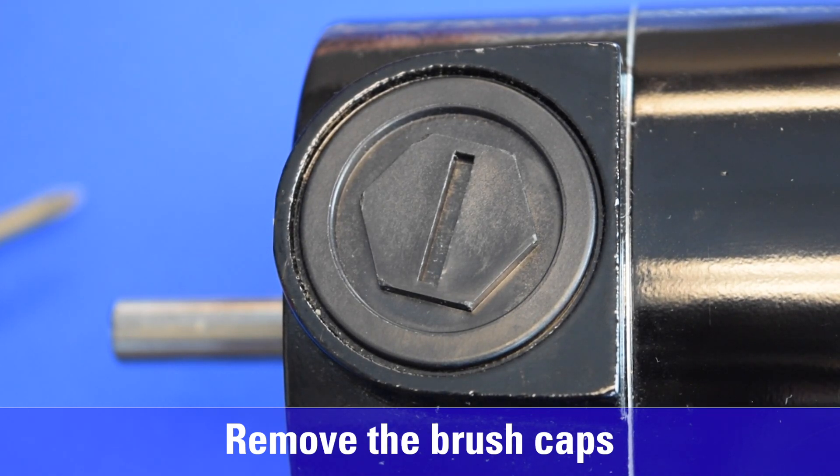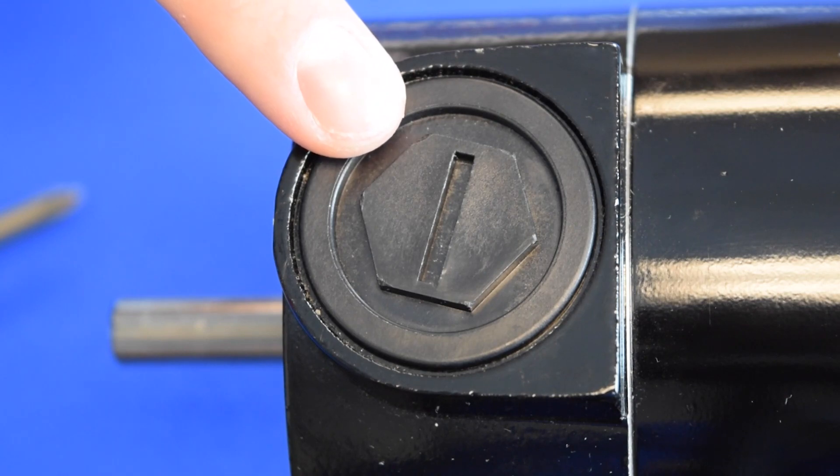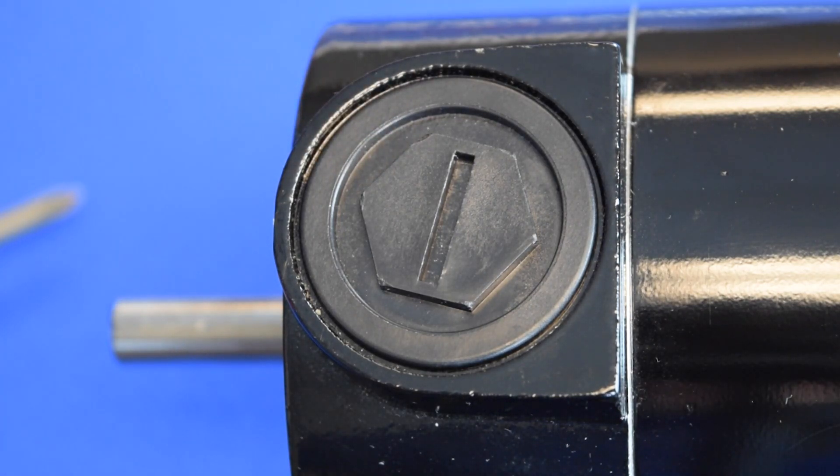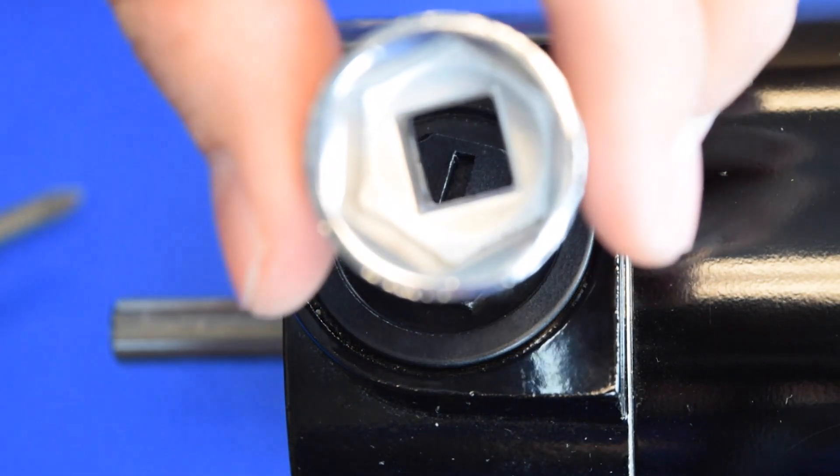First, we have to remove the two brush caps. Each PMDC motor has two plastic brush caps that are held in place with screw threads. Unscrew the brush caps using the largest possible slotted screwdriver or a three-quarter inch hex wrench.